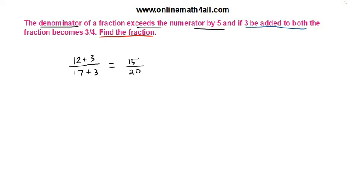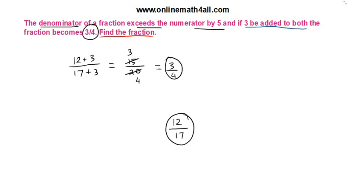Both 15 and 20 are multiples of 5: 5 goes into 15 three times, and 5 goes into 20 four times — so 15/20 equals 3/4. When we add 3 to both numerator and denominator, the fraction becomes 3/4. The second condition is also satisfied. The fraction 12/17 satisfies both pieces of information given in the question.